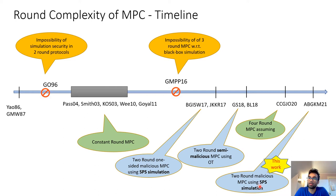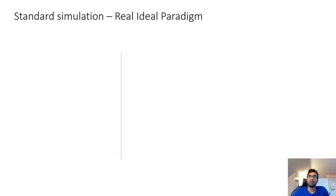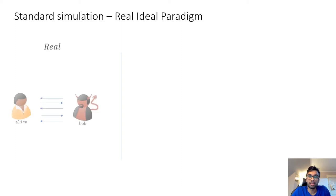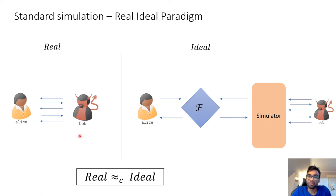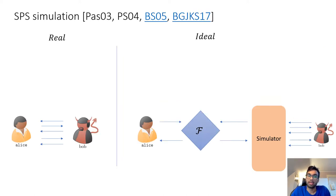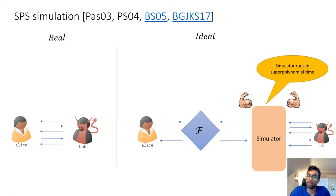In our work, we show how to do a two-round maliciously secure MPC protocol using SPS simulation, where all parties can receive the output at the end of round two. To motivate what superpolynomial simulation is, let me first describe standard simulation in the real-ideal paradigm. We say that a protocol in the real world is secure if the adversary's view can be simulated by an ideal-world simulator which only has access to the ideal functionality. We want the guarantee that the real view should be computationally indistinguishable from the simulated ideal world view, and the restriction on the simulator is that it runs in polynomial time. In SPS simulation, we have the same real-ideal paradigm but we allow the simulator to run in superpolynomial time.